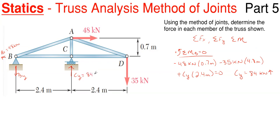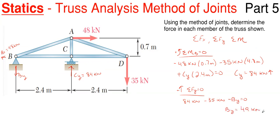Then I can sum forces in the vertical direction to find B sub Y. I have 84 kilonewtons from C sub Y, subtracting off the 35 kilonewtons at point D, and then B sub Y assumed downward. B sub Y pops out to be a positive 49 kilonewtons, which means my original assumption arrow of downward was correct since it came out to be a positive value. So this is 49 kilonewtons.